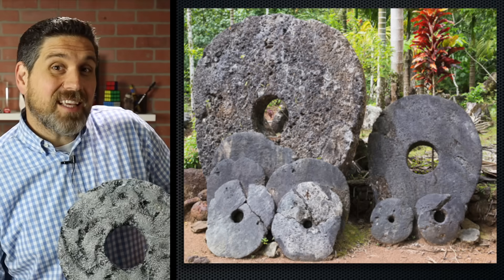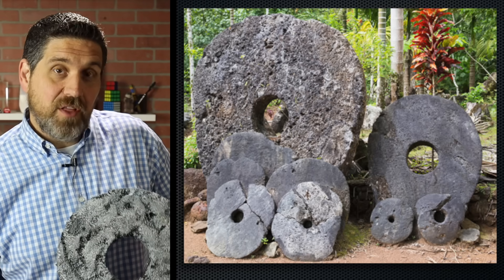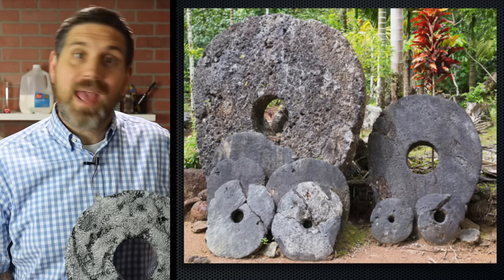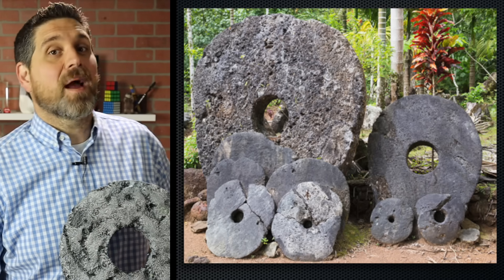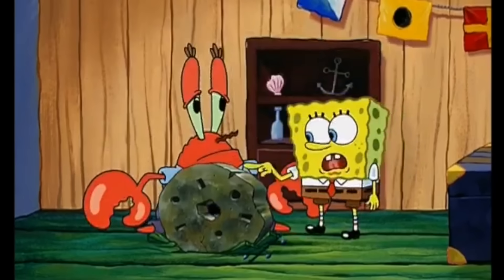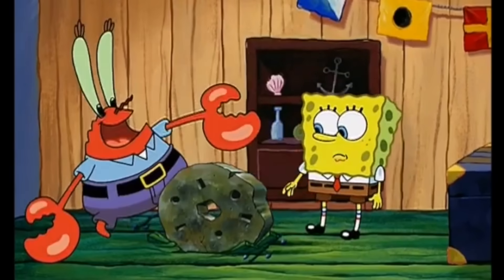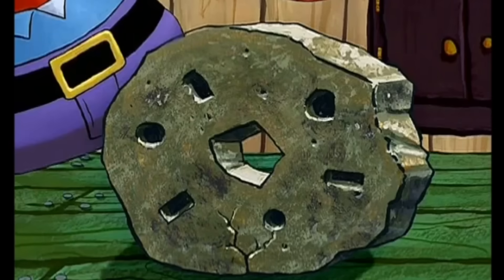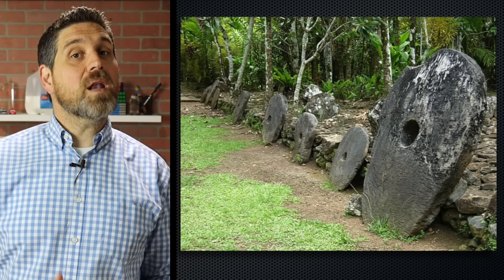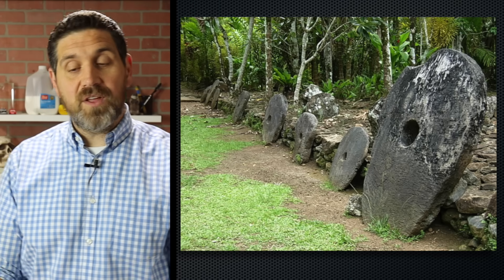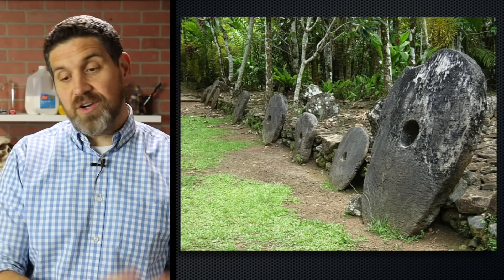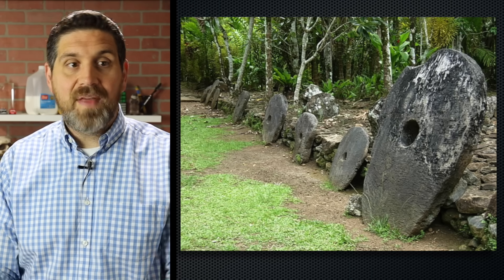The classic example of this are the large stone disks that were used for money on Yap Island in Micronesia. If they wanted to pay someone in their village for a good or for their daughter's dowry, they just said, now you own this stone disk.